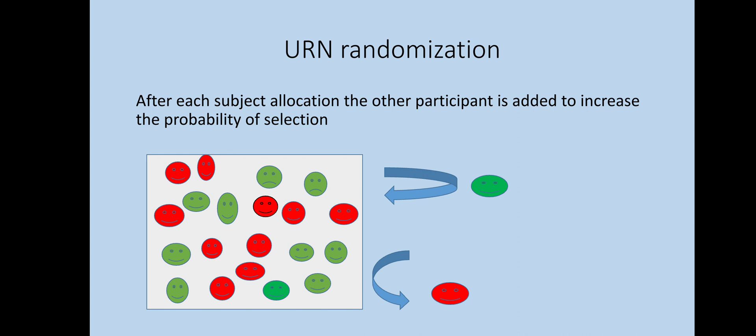There is another form of randomization known as urn randomization. In this type, after each subject allocation, another participant is added to increase the probability of selection from the underrepresented group. For example, if one participant is selected from the treatment group, another participant from the control group is added to increase the chances of selection from the control group.